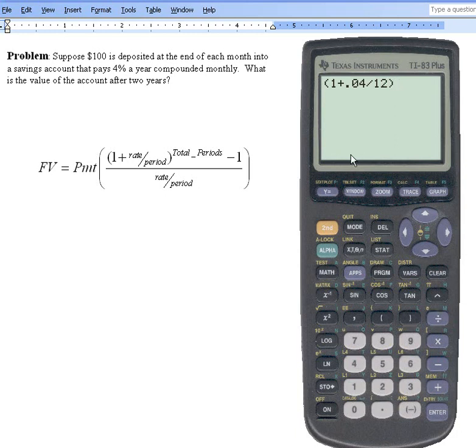That expression, so we close the parentheses, has got to be raised to the total number of periods. Well, you have to know there's 24 months in 2 years. So you look at the caret, 24.